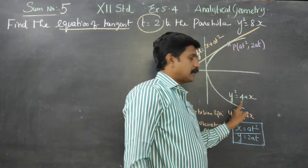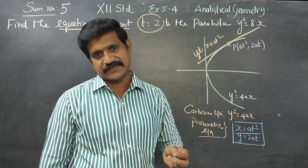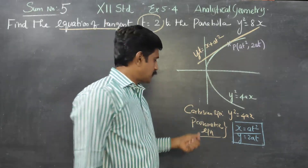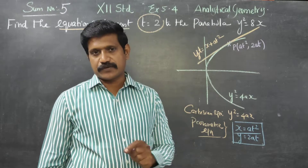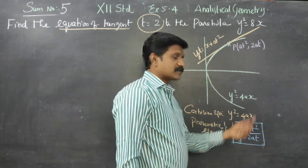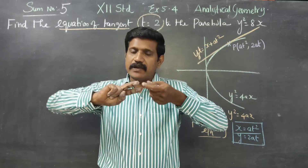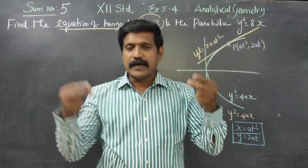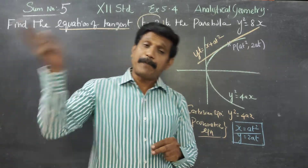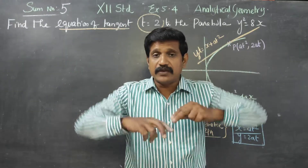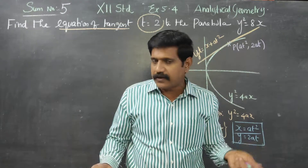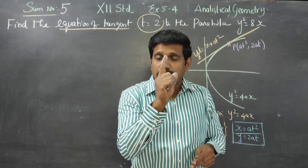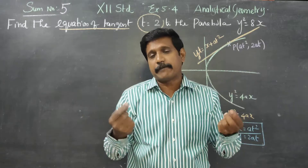A parabola has two types of representations. One is called the Cartesian equation, where y and x are directly related — y is a function of x or x is a function of y. The other is called the parametric equation, where x and y are expressed independently through a third variable called a parameter.